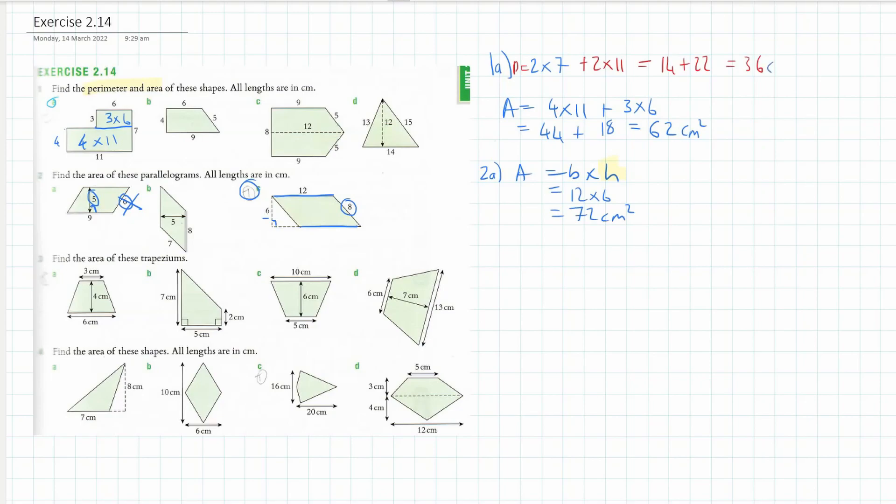The trapezium - the area of a trapezium, and you need to memorize this, is half (a + b) times the height. Now a and b are your parallel sides. So this is a, this is b, or vice versa, it doesn't really matter.